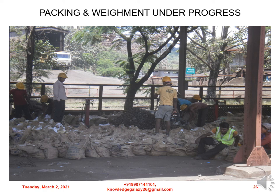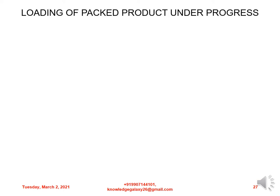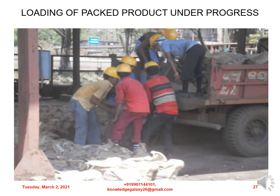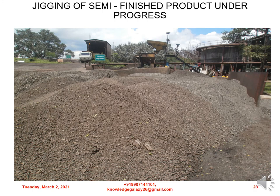Normally, packing is done in 40 or 50 kg bags or 1-ton jumbo bags. As can be seen from this picture, loading of packed products is under progress. Jigging of semi-finished products is also under progress; semi-finished products are those which are basically slag and sand contaminated alloy and the products after primary crushing.